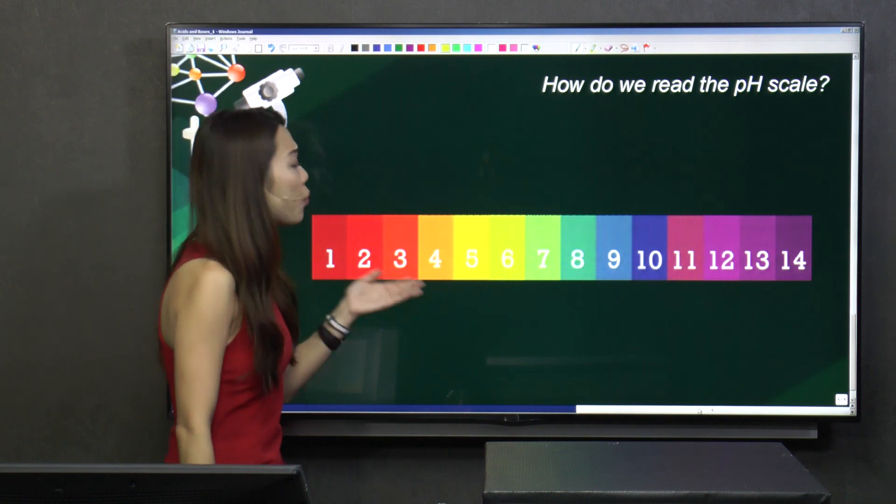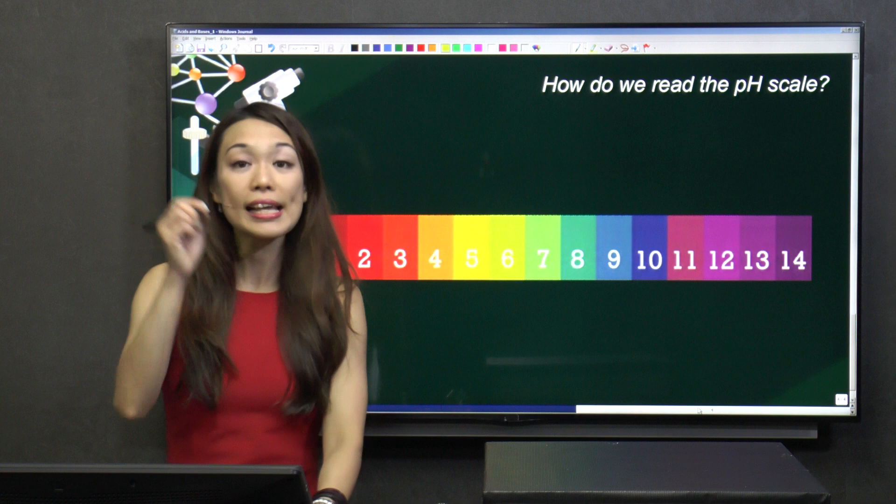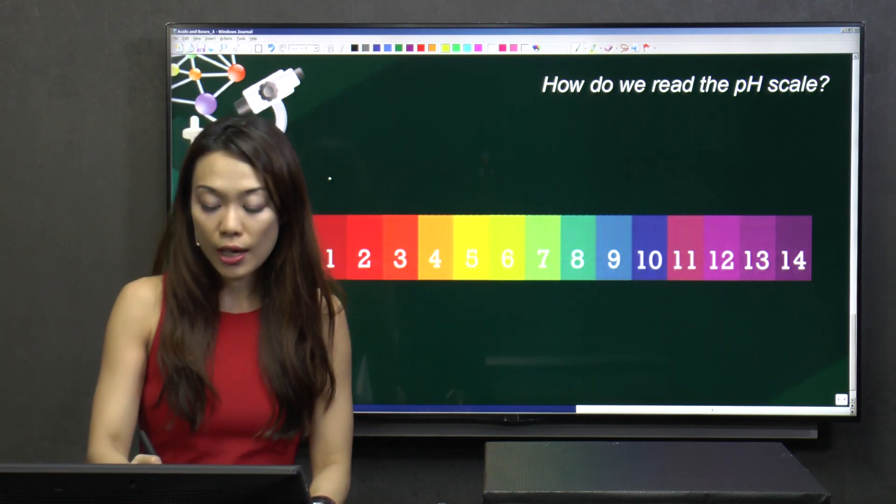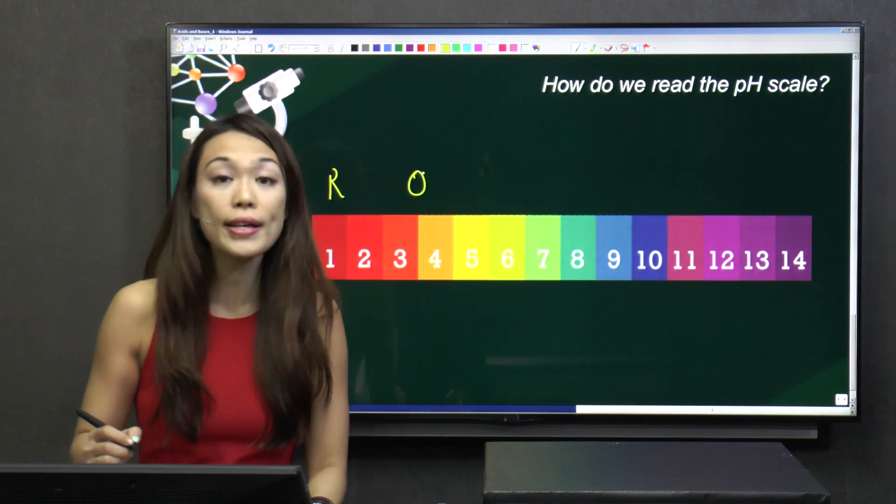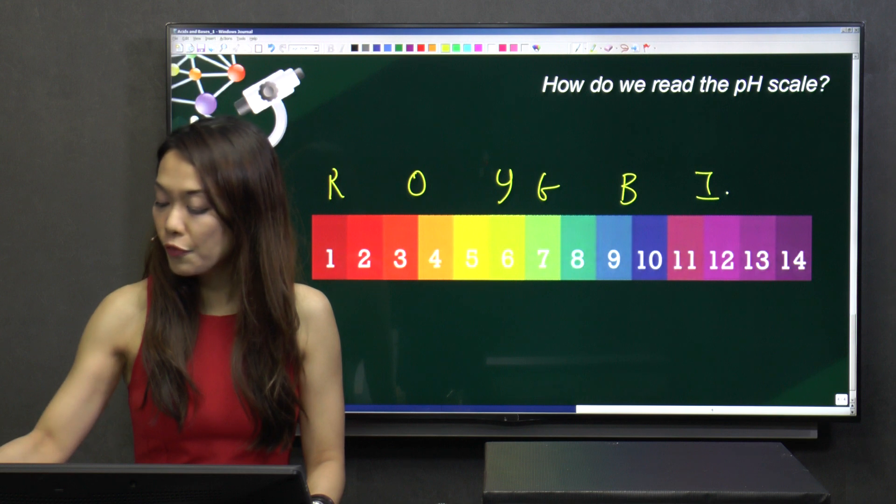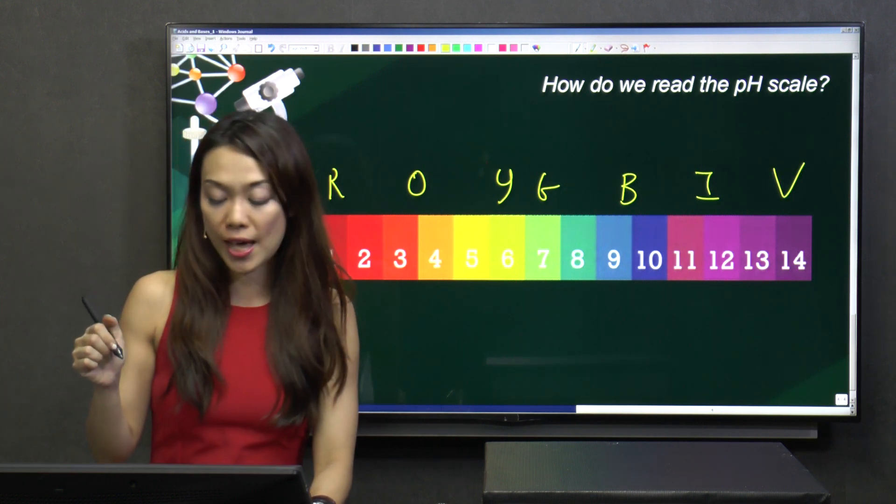And how do we know what does the number represent? Do not fret. I came up with one acronym which is very commonly used. It's called ROY, spelled R-O-Y. Go Business in Vietnam. ROY go Business in Vietnam.